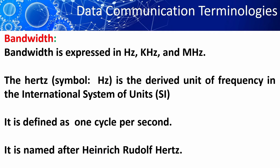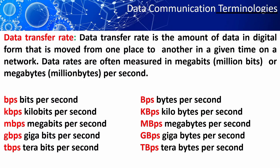Now, we will discuss data transfer rate. Data transfer rate is the amount of data in digital form that can be moved from one place to another in a given time. Data rates are often measured in megabits or megabytes per second. Here, small bps represents bits per second and capital Bps stands for bytes per second. The other units are kbps, mbps, gbps, and tbps.